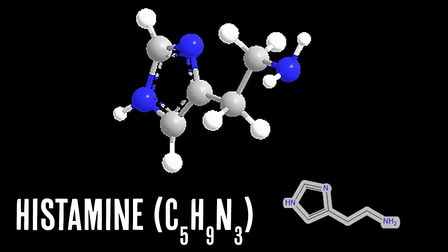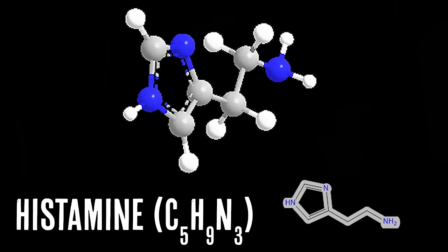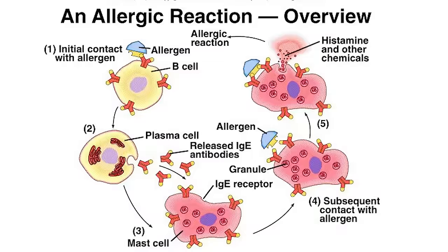Welcome back everyone to a new video. Today we're going to be making histamine, the essence of allergies. You've most likely heard of histamine because it's a main cause of allergic reactions — well, not really a cause per se. What happens is when your body detects an allergen, it releases histamine saying 'hey, there's a foreign invader we need to take care of,' and that causes the allergic response. So really histamine is just a middleman — that's why it's the essence of allergies.